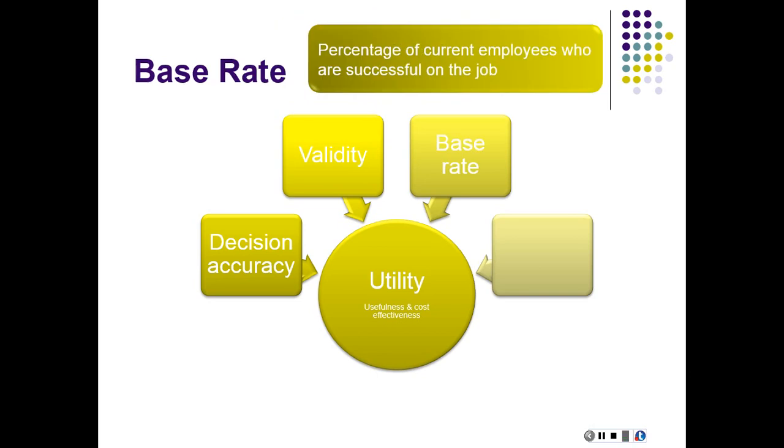Base rate refers to the percentage of current employees who are successful on the job. When we talk about the usefulness of a prediction battery, before we implemented the battery, if we have 80% of our employees operating at the acceptable level, and then after implementing the battery, we have 80% of those people hired under the battery being successful on the job, it doesn't seem all that useful. Why did we bother if what we were doing beforehand was working just as well as what we're doing now? Generally, we want to find out how many people who were hired in the old routine have been considered successful compared to what this predictor is able to do, what this battery is able to do for us.